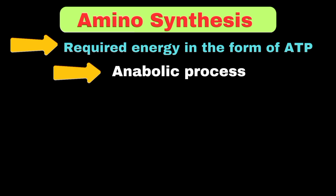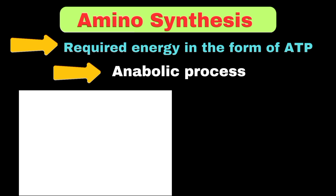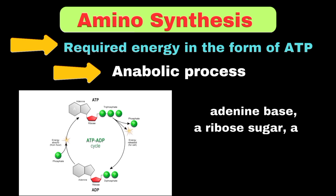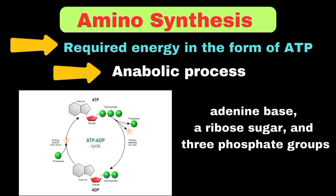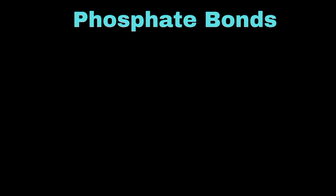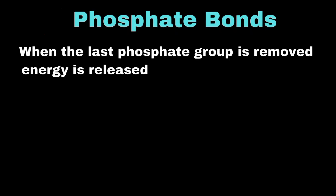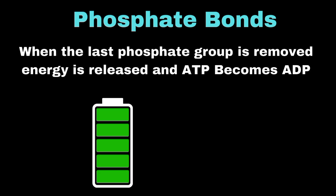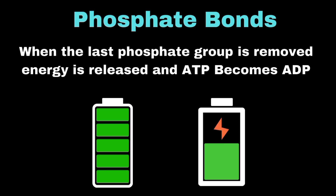ATP plays a central role in energy transfer. ATP has three parts: an adenine base, a ribose sugar, and three phosphate groups. The key to ATP's energy-carrying ability lies in its phosphate bonds. When the last phosphate group is removed, energy is released and ATP becomes ADP. This energy release can be compared to a fully charged battery becoming a partially charged battery.